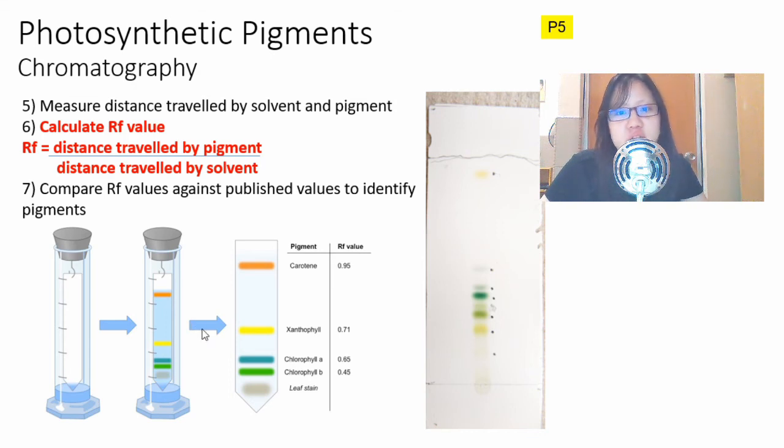We can actually judge what pigment it is by the position and looking at its color as well. Chlorophyll A you expect it to be a bit yellow green, chlorophyll B a bit more blue green, carotene a little bit more orange. But as you can see here it's very hard to tell the difference between what is what. So what we do is we calculate the Rf value.